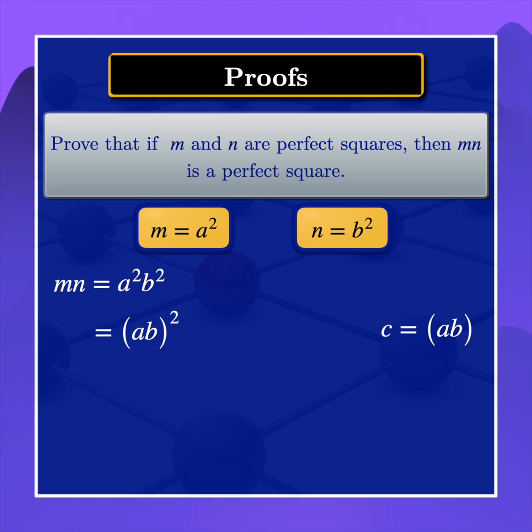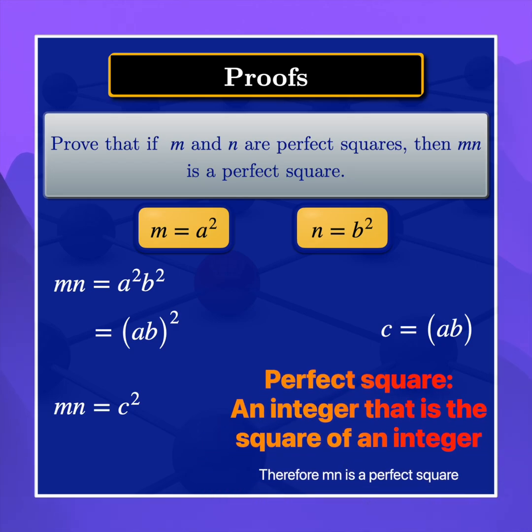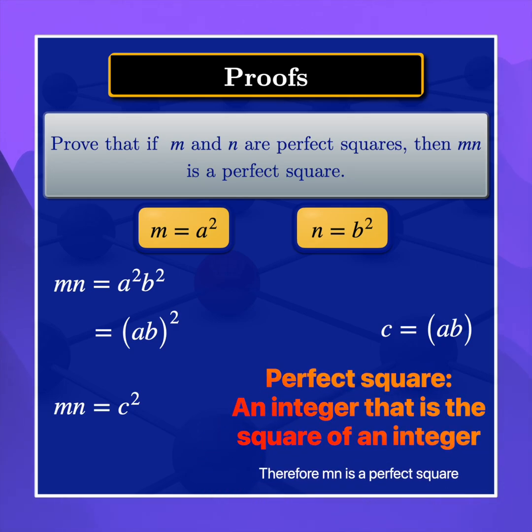So we have m times n equals c squared. What we have here is an integer that is the square of another integer. m times n is the square of c. So we conclude that by definition, m times n is a perfect square.